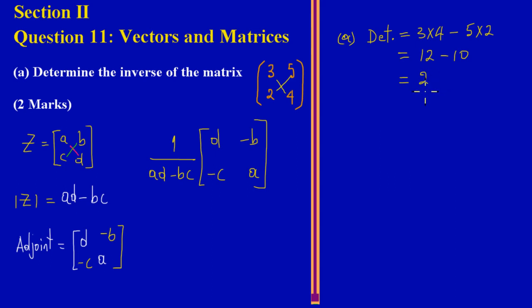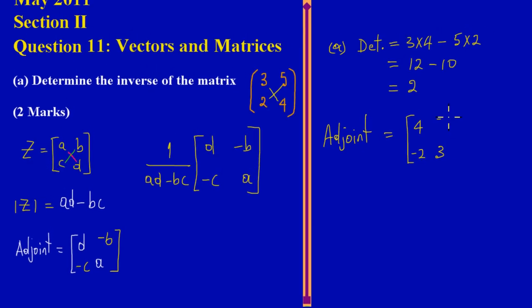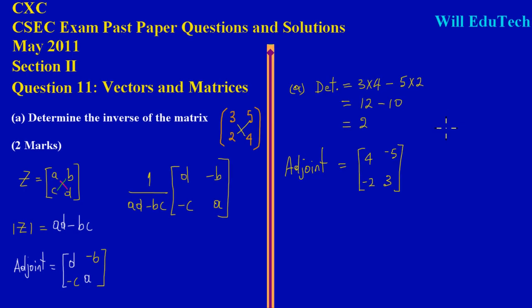Now I need to find the adjoint. The adjoint of the matrix: I'm taking the leading diagonals and switching places with them, so 3 and 4 is going to switch places, so I'm going to have a 4 and a 3. And then 5 and 2, I'm just simply going to change the sign on those, so I'm going to have a negative 2 and a negative 5. That's my adjoint.